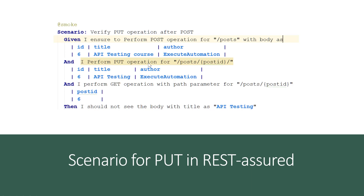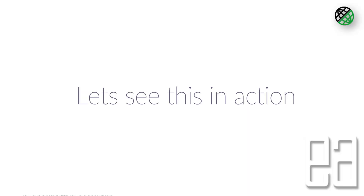This time we are going to perform a PUT operation, where we are updating the existing title from 'API testing course' to 'API testing'. Then we perform a GET operation and we should see the title as 'API testing'. This particular step definition has to be modified, so we'll be implementing two steps and then we're done with the PUT operation.